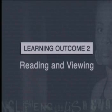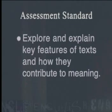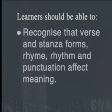The following lesson is linked to Learning Outcome 2, Reading and Viewing. It addresses the assessment standard that requires learners to explore and explain key features of texts and how they contribute to meaning. Learners should be able to recognise that verse and stanza forms, rhyme, rhythm and punctuation affect meaning.